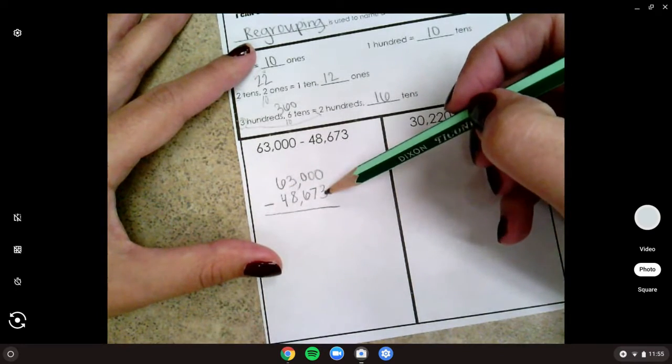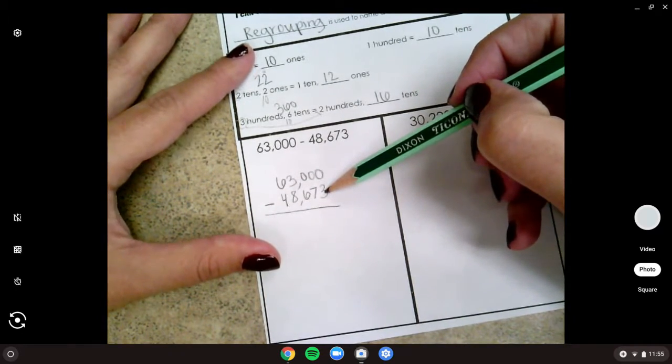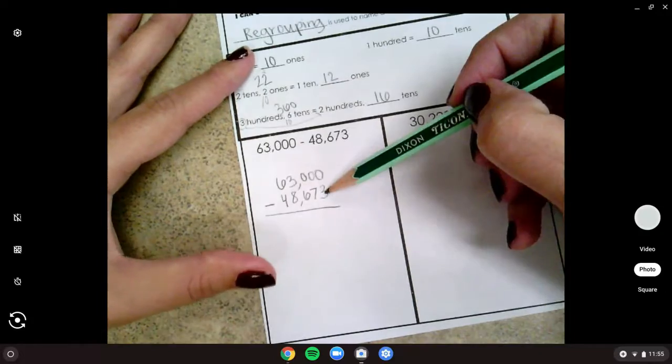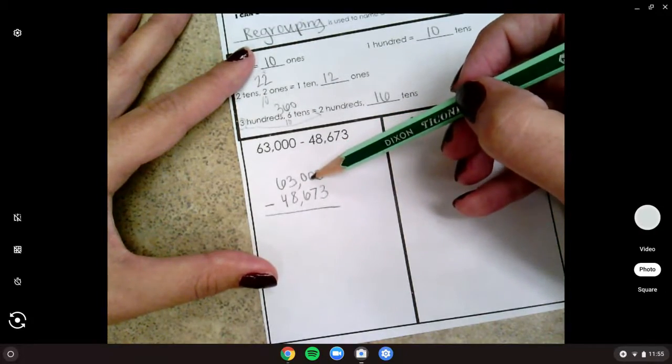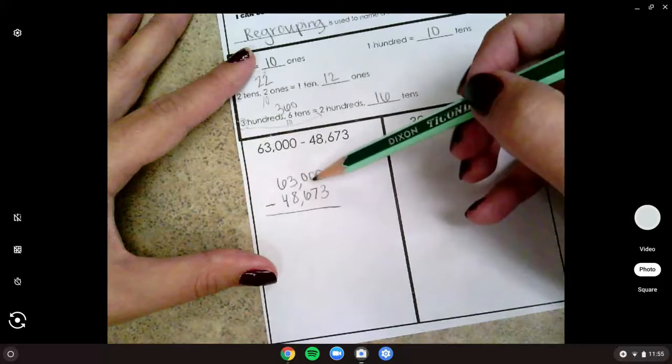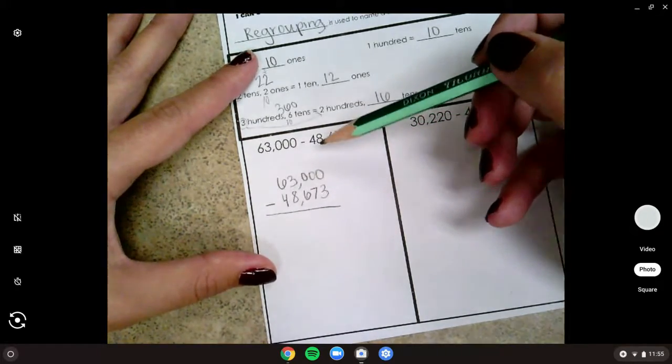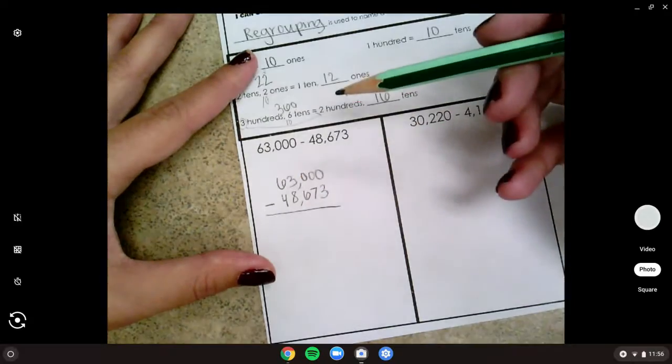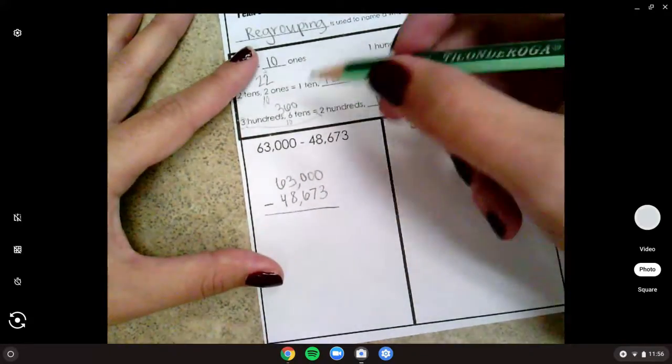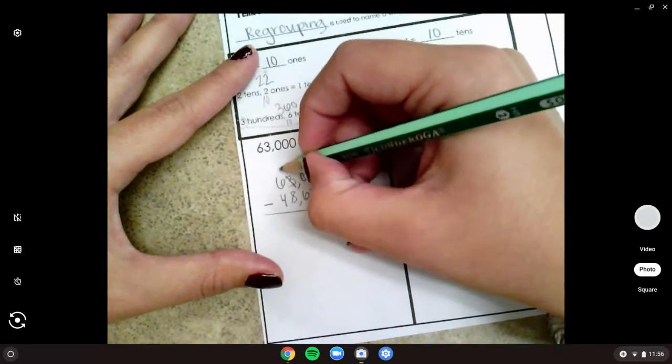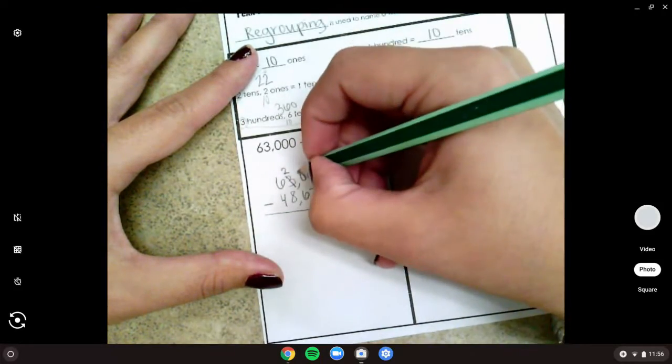All right, so now I'm going to go through and start subtracting. Zero minus three. Oh no, we can't do that. So let's think back to like that video. I remember they tried to go next door, but we can't go next door. That's a zero. Let's go next door. It's still a zero. All right, let's go next door. Oh, finally somebody's home. We can borrow from him to regroup.